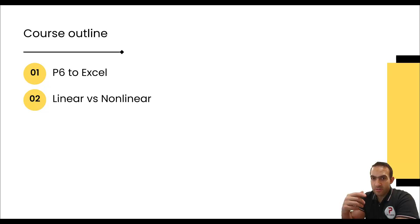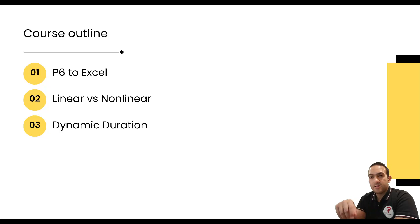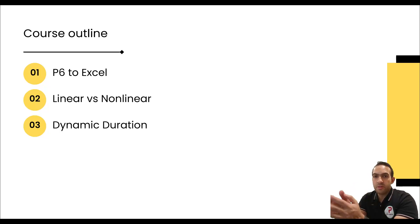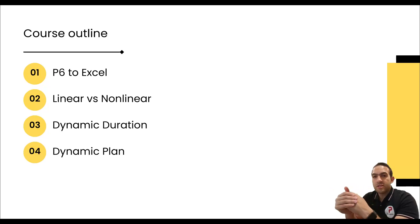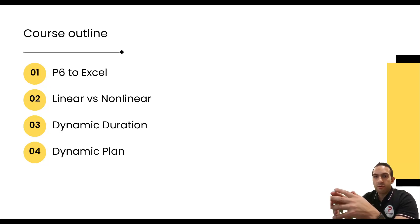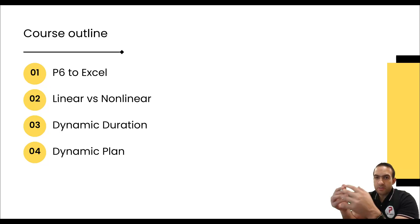We will talk about how to get the duration between two dates considering weekends and public holidays, and how to make it dynamic with the data date. Using this, we will see how to get the planned percentage or planned value for every day, week, or month, depending on the reporting period you use.